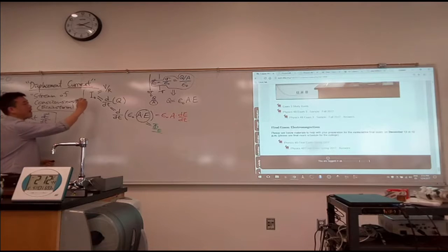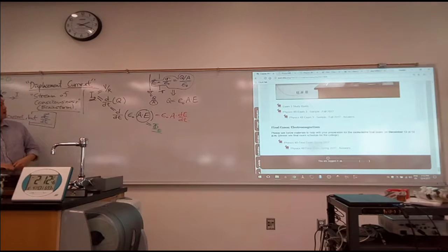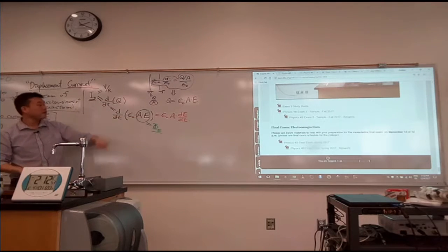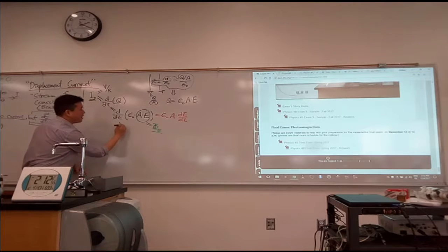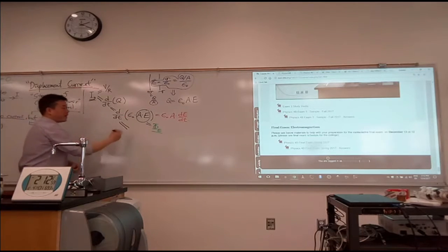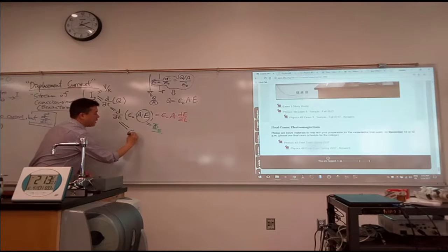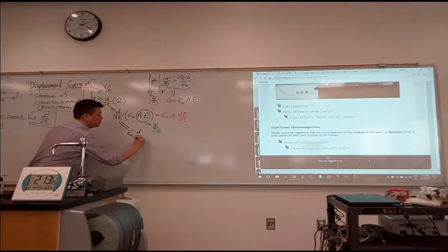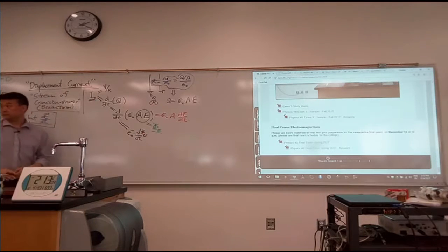So with that symbol, this is how we would write down the final version of this line of expressions. Starting from this I naught, we would say, well, this relates to the charge on the capacitor, which relates to the electric field, which leads to this final relationship. So epsilon naught is still constant. Let me pull it out. Epsilon naught times rate of change of the electric flux.